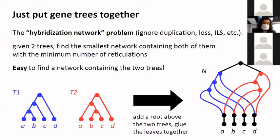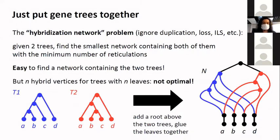It's actually quite easy to do if you just want to have a network containing the two trees. Here you see you have two gene trees T1 and T2, add a root above the two trees, glue the leaves together, and then you have four reticulations in this example. Maybe that's too many reticulations. So the hard part is to have the minimum number of reticulations in the network that you're constructing.